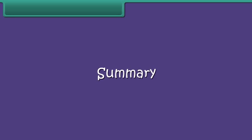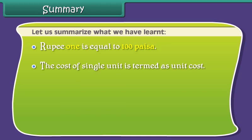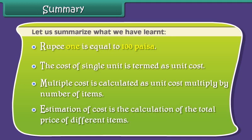Summary. Let us summarize what we have learnt. Rupee 1 is equal to 100 paisa. The cost of a single unit is termed as unit cost. Multiple cost is calculated as unit cost multiplied by number of items. Estimation of cost is the calculation of the total price of different items. Are you ready? Thank you.